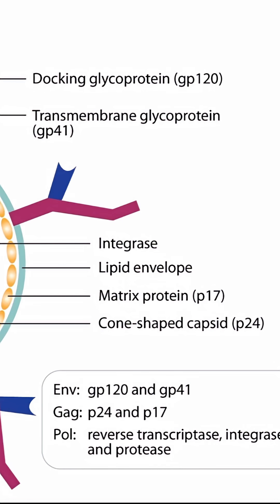If we return to this image, you can see that gag encodes for P24 and P17. P24 are the capsid proteins that form the cone-shaped capsid, and P17 are the matrix proteins that form the matrix.